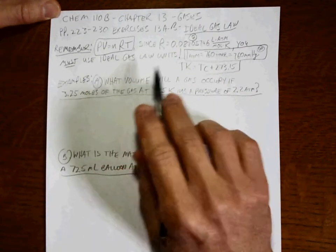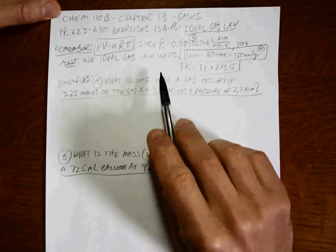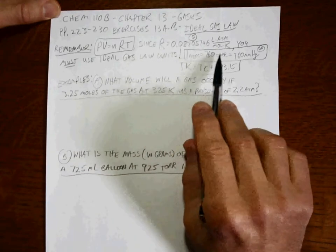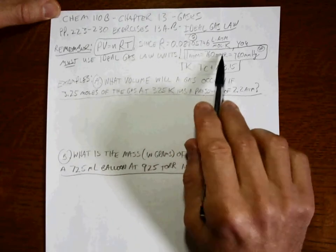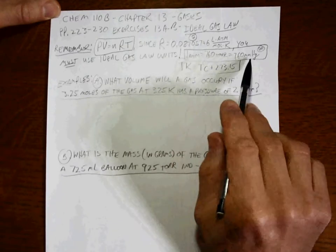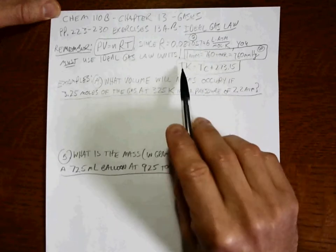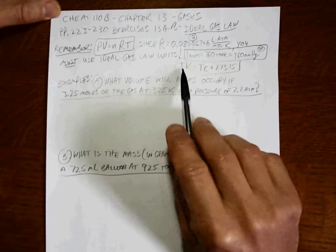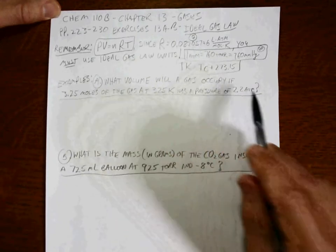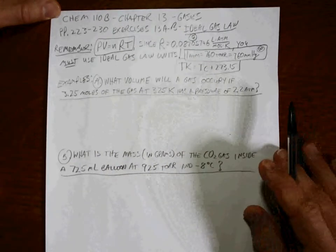They have to go together. Also remember that one atmosphere is the same as 760 torr, 760 millimeters of mercury. Those are just pressure values, infinite number of sig figs. And conversion between kelvin and Celsius is this, back from Chapter 2.